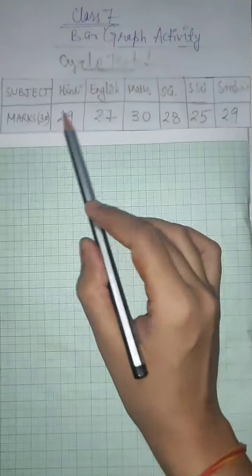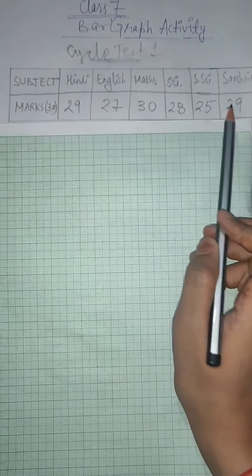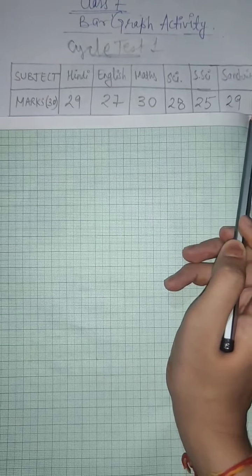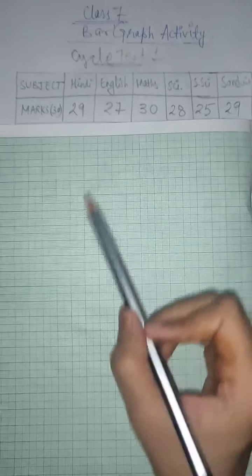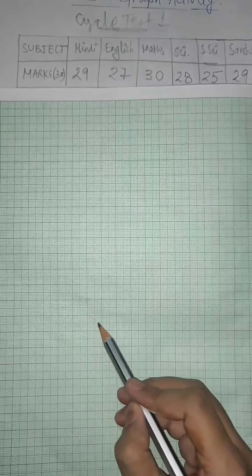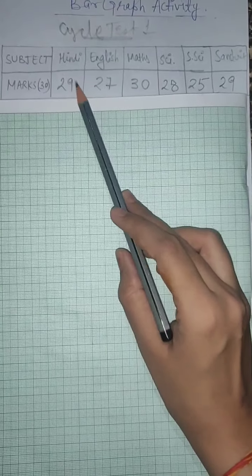You have to write the cycle test 1 in the table and you have to make a graph. What was the most important thing about the graph? The bars should have equal gap between them, the width should be equal, but the first thing is scale.